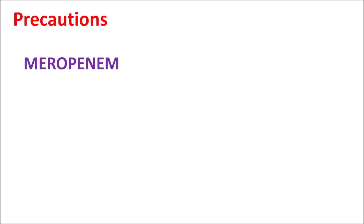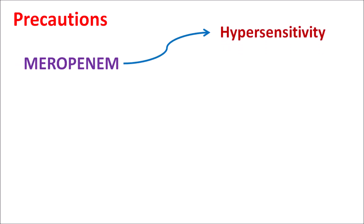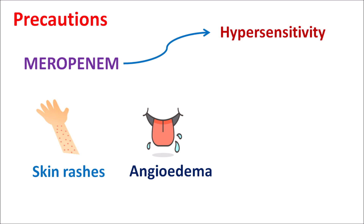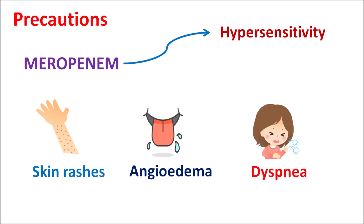Just like penicillins, meropenem can also produce hypersensitivity reactions, including skin rashes, angioedema with swelling of the neck, face, tongue, and pharynx, and in severe conditions, dyspnea (difficulty breathing). These reactions are important because many beta-lactam antibiotics can induce hypersensitivity in some individuals. If any hypersensitive reactions develop, meropenem should be discontinued.